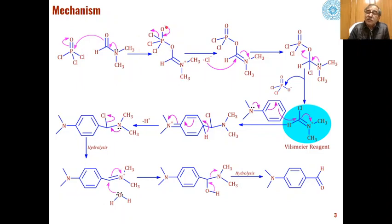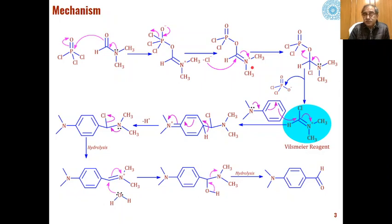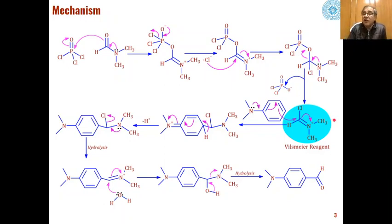The negative charge on oxygen is then displaced to form a phosphorus-oxygen double bond, and one of the chloride groups acts as a leaving group, removed as Cl⁻. This chloride then attacks the carbon-nitrogen double bond to neutralize the positive charge on nitrogen. The lone pair on nitrogen again forms a carbon-nitrogen double bond, the dichlorophosphate is removed, and the Vilsmeier reagent is produced.